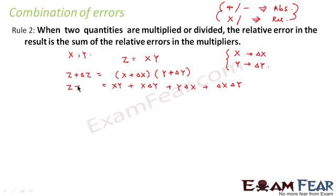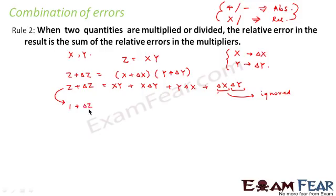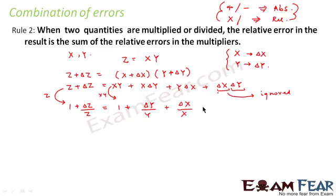Since delta x and delta y are both very small, we ignore the product of these two small quantities. Next, we divide the left-hand side by z and the right-hand side by xy. So we get 1 plus delta z by z on the left, and 1 plus delta y by y plus delta x by x on the right. The 1s cancel on both sides, giving us delta z by z equals delta x by x plus delta y by y.